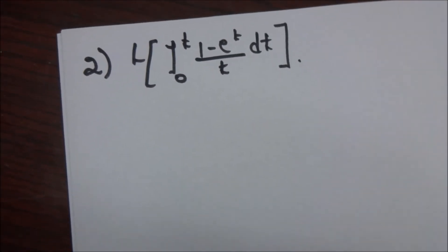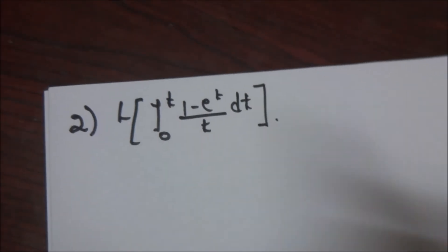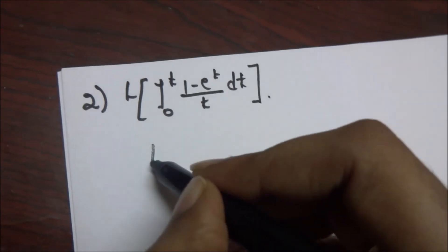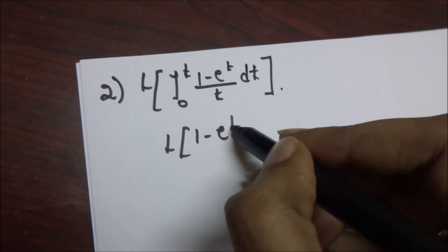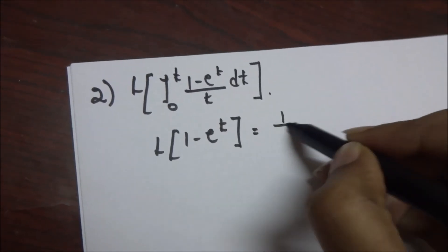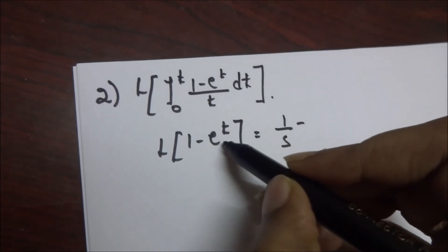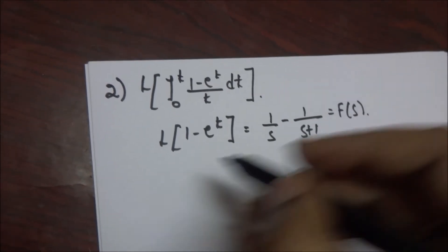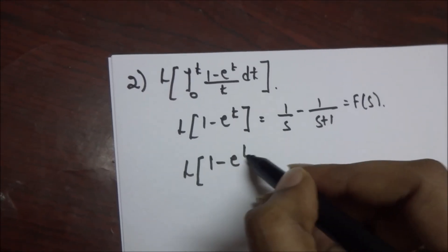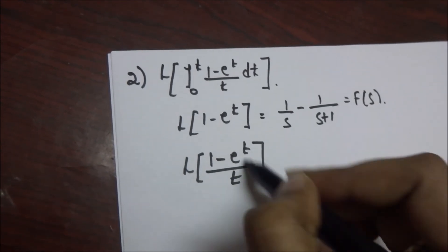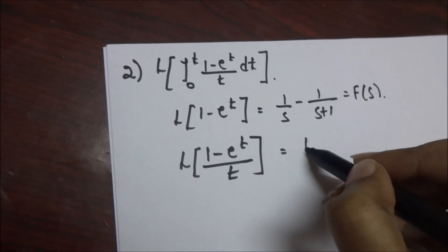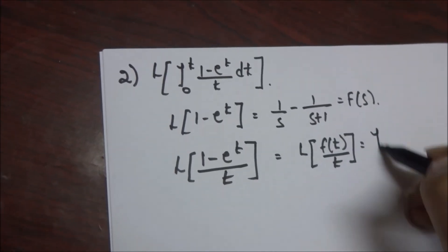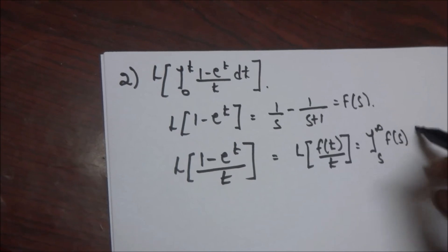The second problem is on evaluation of integrals by Laplace transform. The given problem is in the form of Laplace of the integral from 0 to t of f(t) dt. Now, Laplace of (1 - e^t) equals Laplace of 1, which is 1/s, minus Laplace of e^t, which is 1/(s+1). This is represented as F(s). For Laplace of (1 - e^t)/t, we use the division-by-t formula: Laplace of f(t)/t equals the integral from s to infinity of F(s) ds.